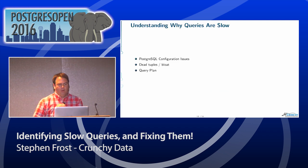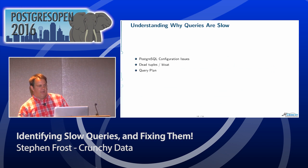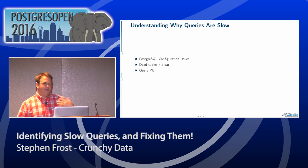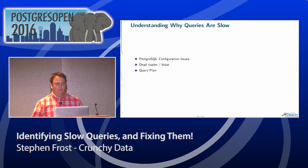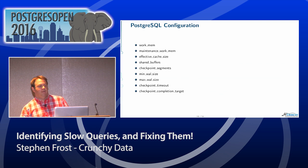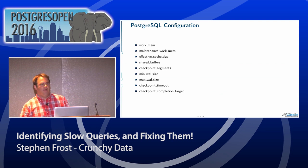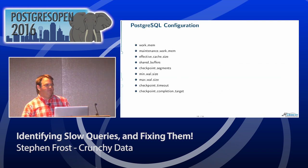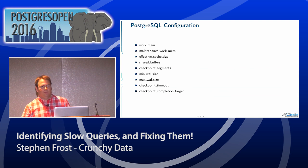Now let's talk about understanding why queries are slow. Queries can be slow due to configuration issues, bloat, and query plan — and probably some other things, but these are the things we're going to talk through. The first thing is Postgres configuration. There are lots of different configuration options — I'll talk through some of them as we go and cover a few at the end, but be aware of these as ones you want to particularly look at in the Postgres config file.